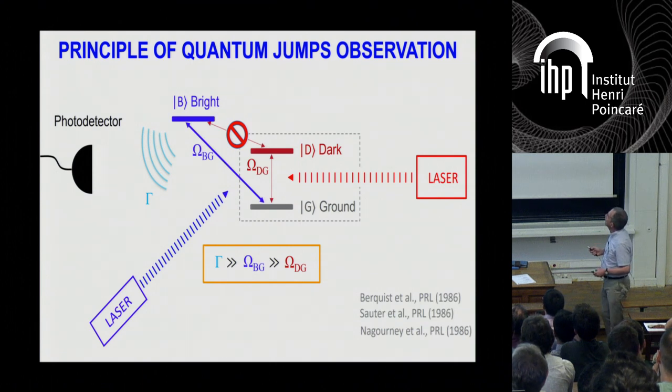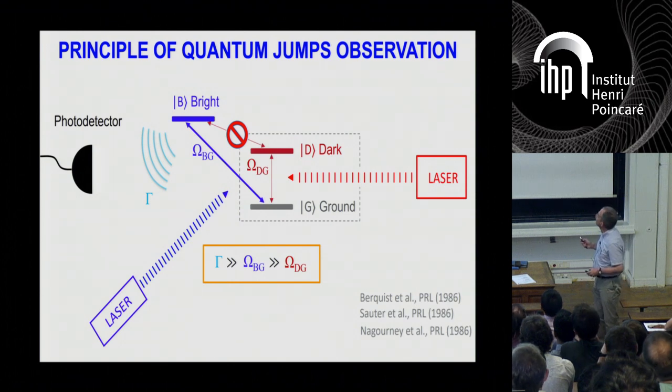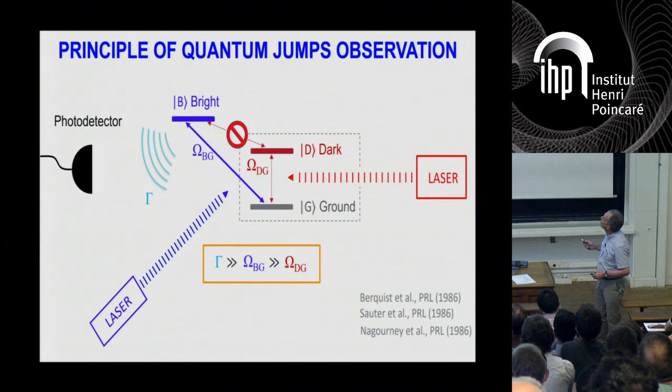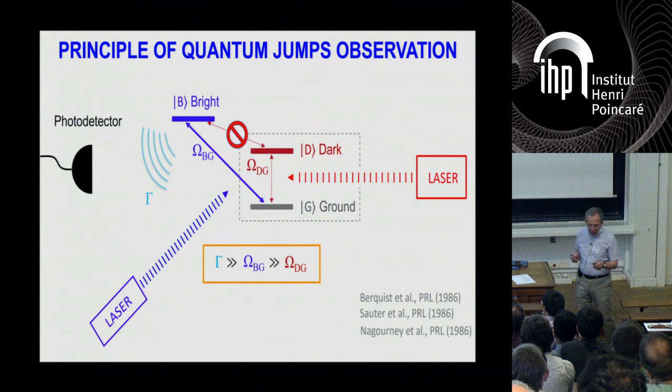So the detection of this DG manifold is an indirect QND measurement. It is based on some kind of counterfactual reasoning. So if you don't see the fluorescence of the bright state, it means that the atom cannot be long, no longer be in G, because if it would be in G, it would be driven very strongly by this drive to B, and it would fluoresce. Instead, the atom must be somewhere else, and evidently in that state dark.